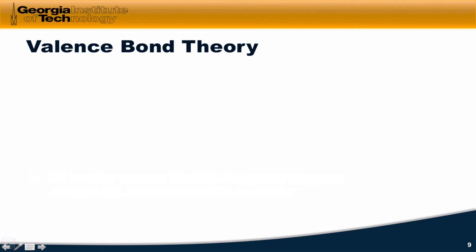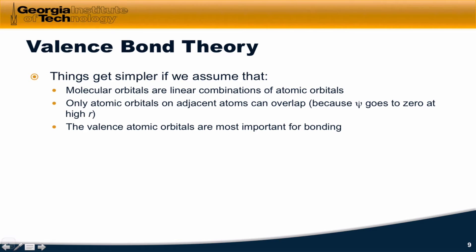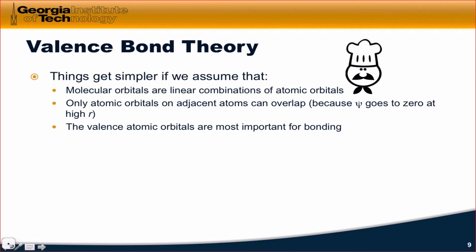Valence bond theory is one of the simpler bonding theories that makes the following assumptions. Firstly, molecular orbitals are linear combinations of the atomic orbitals. What that means is to construct an orbital that applies to a molecule, we take the atomic orbitals and use those as ingredients — there's almost a cookbook nature to this. We take, for example, s orbitals and the various p orbitals of the atoms involved, and then we combine them and mix them together by scaling them, multiplying or dividing them by certain constants.